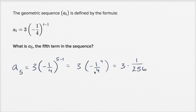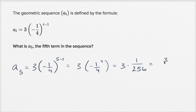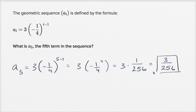Once again, I know it's going to be positive because I'm multiplying four negatives together, which gives a positive value. So I get three over 256, and we're done. That's the fifth term in our sequence: positive three over 256.